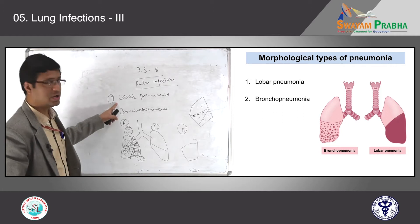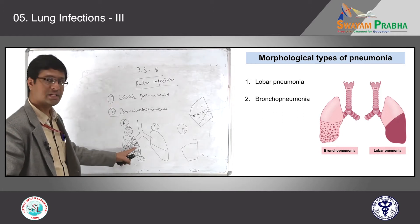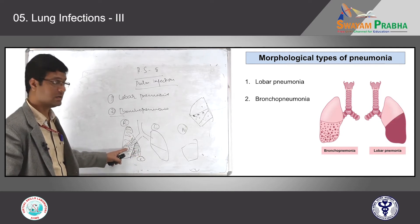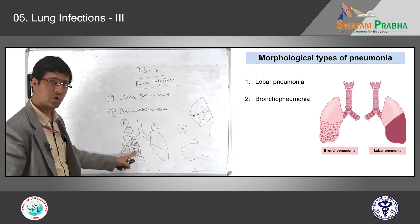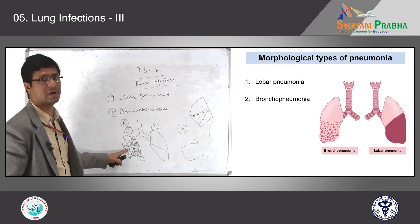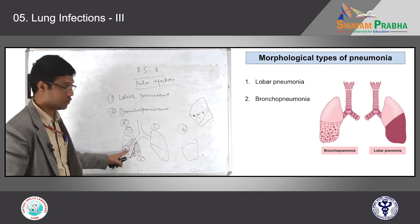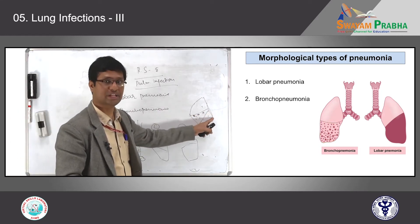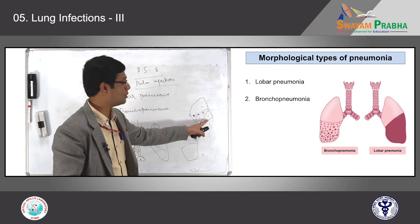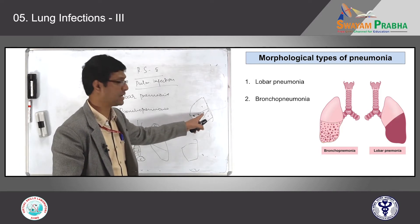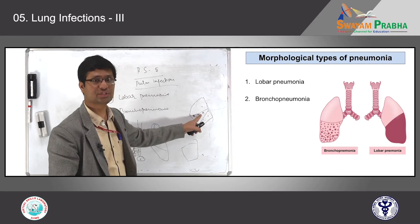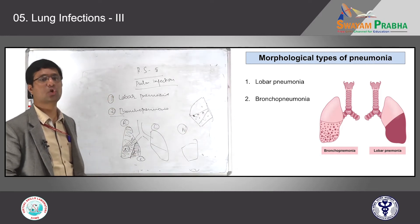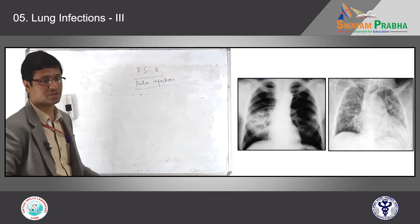To repeat: lobar pneumonia means complete involvement of one lobe of the lung — it may be one lobe, two lobes, or the whole lung. If one lobe is involved, the next lobe is perfectly fine and uninvolved. Bronchopneumonia usually shows multiple patchy involvement across more than one lobe, and the intervening lung parenchyma between the pink patches will be normal. This is the morphological difference between lobar and bronchopneumonia, as seen on chest radiographic films.